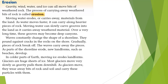Waves constantly change the shape of a shoreline. They pound against cracks in the rocks on the shore, and gradually pieces of rock break off and the waves carry them away. As parts of the shoreline erode, new landforms such as beaches develop. In colder parts of Earth, moving ice erodes landforms. Glaciers are huge sheets of ice; most glaciers move very slowly as gravity pulls them downhill. As glaciers move, they wear away bits of rock and soil and carry these particles with them.